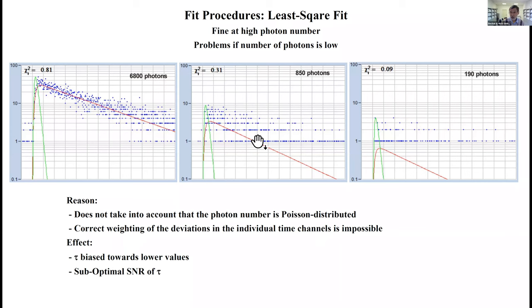But when the photon number becomes very low you run into a problem as you see on the right. The reason is that the least square fit is not able to take into account that the photon number is Poisson distributed. It's impossible to provide a correct weighting of the deviations in the individual time channels, and you don't get the optimal signal to noise ratio. What also happens, the lifetime is biased towards lower values if you have low photon numbers. This is not what you want.